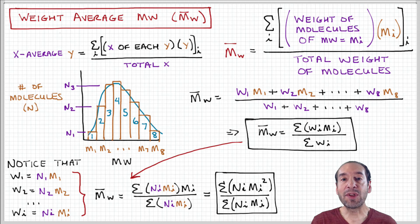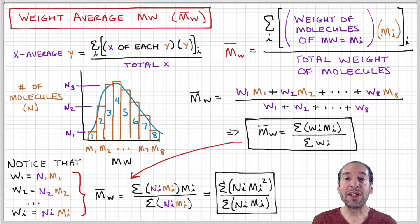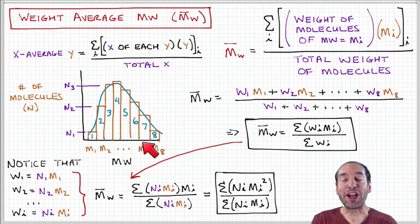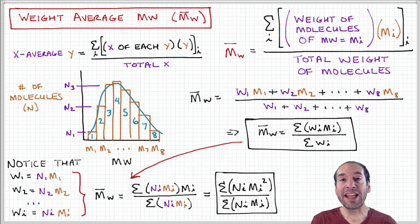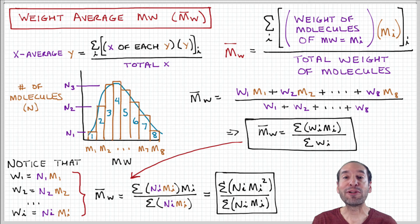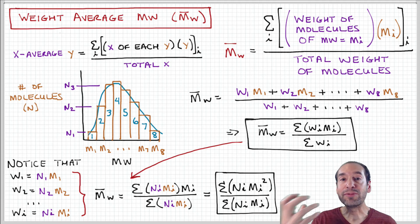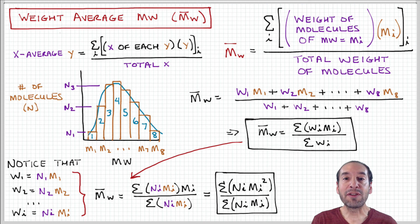To connect with the class average example used for the number average molecular weight — where you average the number of students that got a certain grade and divide by the total number of students — the weight average is analogous to grading term papers by putting them on a scale and weighing them. For each grade, you have a total weight of papers that scored an 85, or a total weight that scored a 90, and you compute an average influenced by the length of the paper. So instead of the number of students, it's related to the mass or weight of the product produced.